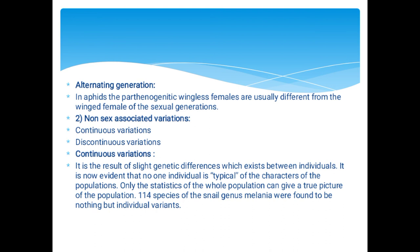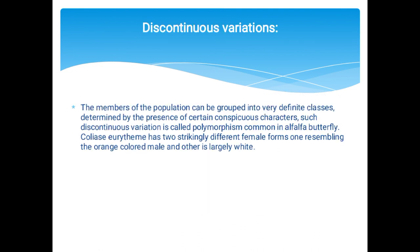Non-sex-associated variations include continuous and discontinuous variations. Continuous variation results from slight genetic differences between individuals — only the statistics of the whole population can give a true picture, as 114 species of the small genus Melania were found to be nothing but individual variants yet distinct from each another. Discontinuous variation groups population members into very definite classes determined by conspicuous, specific characters — called polymorphism. A common example is the alfalfa butterfly Colias eurytheme, which has two strikingly different female forms: one resembling the orange-colored male and the other largely white.